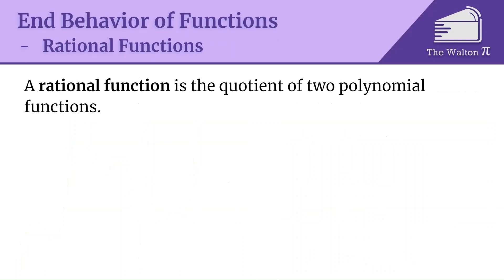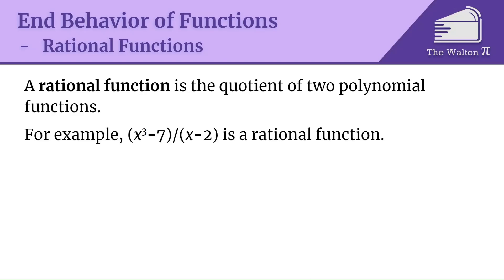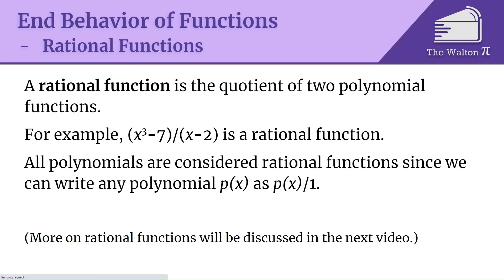Now we'll transition away from polynomials and introduce rational functions — the quotient of two polynomial functions. For example, (x³ − 7) / (x − 2) is a rational function: a polynomial on top divided by a polynomial on the bottom. Every polynomial is also a rational function since we can write it as p(x) / 1. The next three sections will cover rational functions in depth, but for now we just need to know what they are.